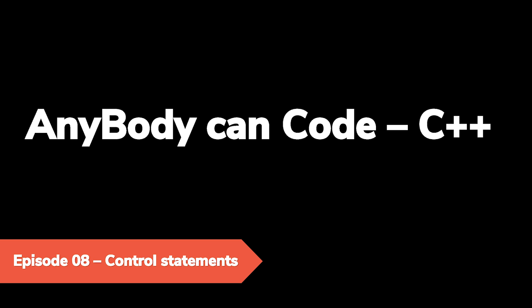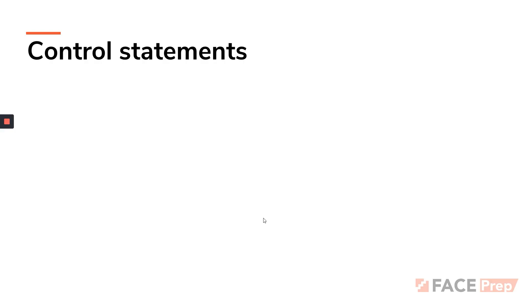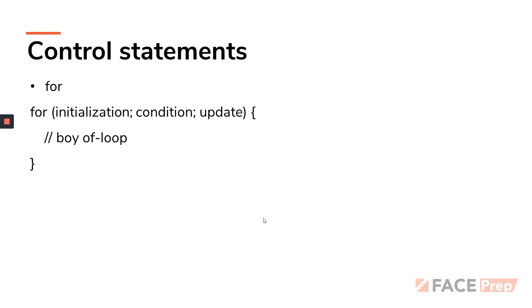In control statements we have three basic loops. The first one is the for loop, the second is the while loop, and the third is the do-while loop. I'll be telling you everything related to these. So let's start with the for loop. The syntax is as shown on the screen — you write the keyword 'for', then you have initialization, a condition, and an update. Inside the braces you write whatever the loop is supposed to do.